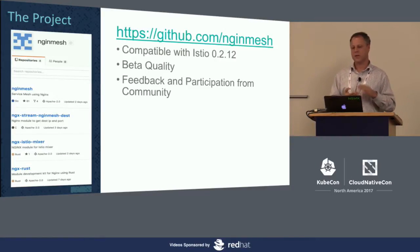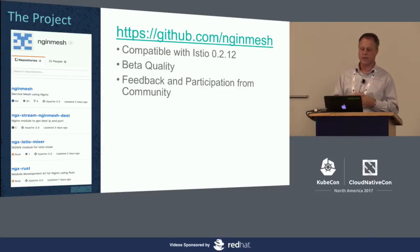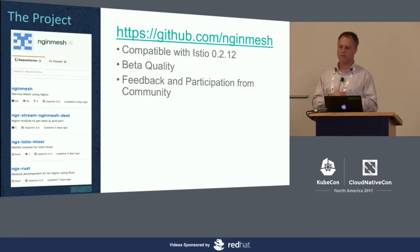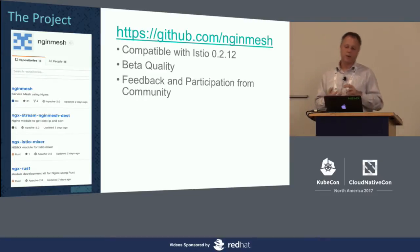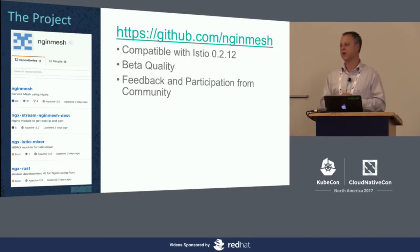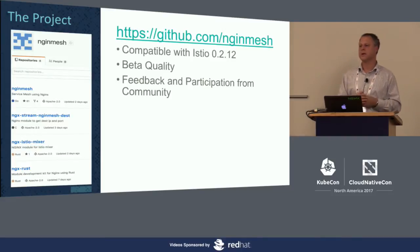There is one roadmap item which some of you have already requested: gRPC. gRPC should be released — right now it's in preview — but should be released to customers in Q1 2018. This is an open source project, and you can visit it today at github/nginmesh. It has various components — engine mesh is the core component — and it has an agent that runs so you can make modifications to augment it with additional directives. It's beta quality, comparable with Istio 0.2.12, and we encourage you to participate.